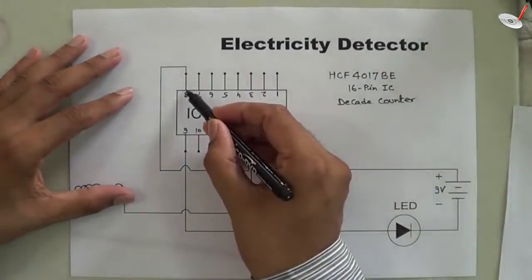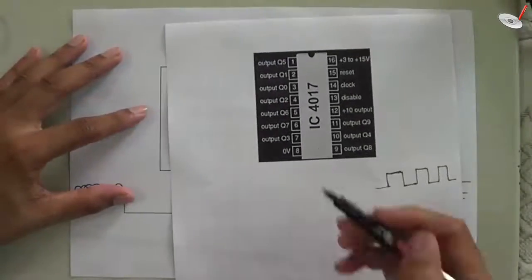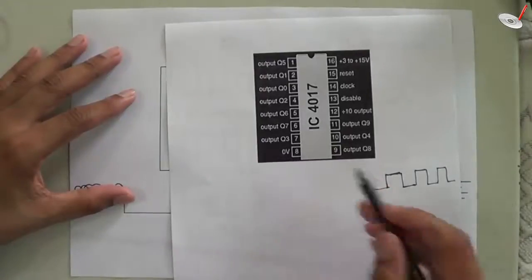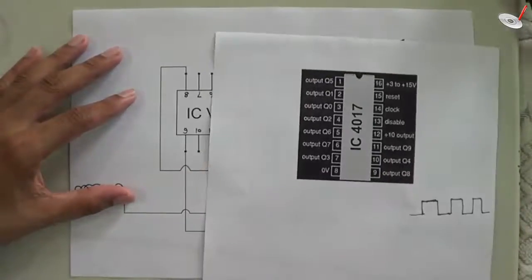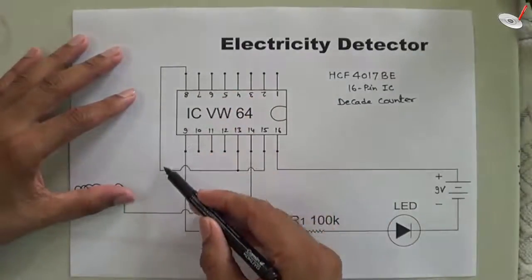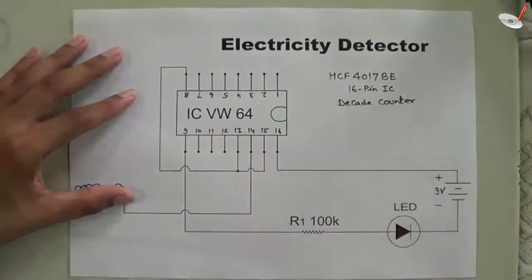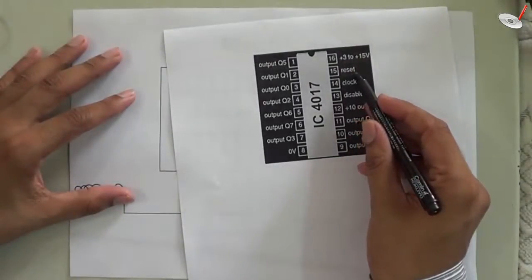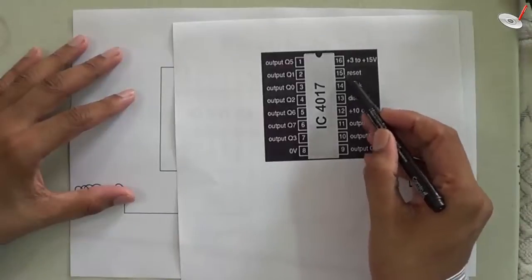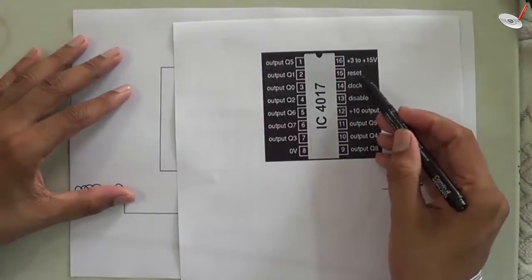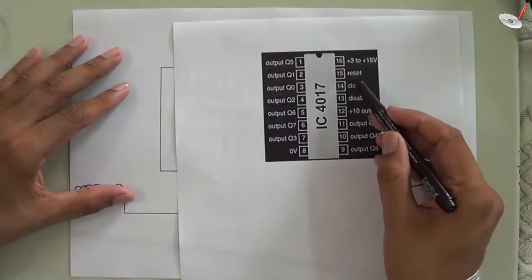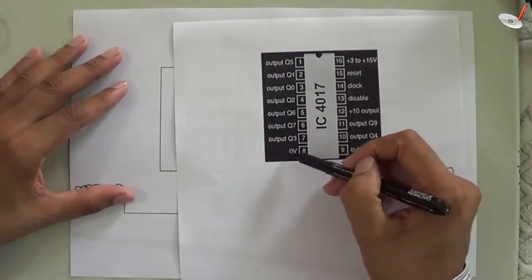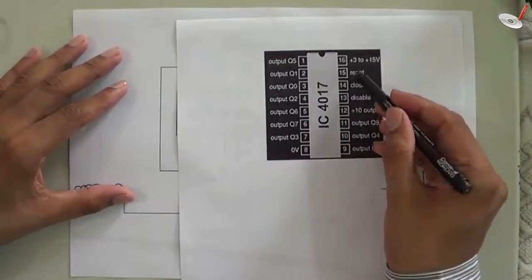On pin number 8, you can see it is 0 volt, which is equivalent to ground. We have connected this ground to pin numbers 13 and 15, because pin 13 is for disable and pin 15 is for reset. If I keep these pins open, they will be treated as high, and the circuit may reset or be disabled. To prevent this, we have to connect pins 13 and 15 to pin